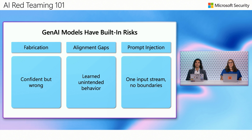Generative AI models have built-in risks. Broadly speaking, we could think of them as risk of fabrications, alignment gaps, and risk of prompt injections. Fabrications happen when the model gives you information that is incorrect but the model is confident about it — for example, citations that generative AI models tend to make up. Alignment gaps stem from models learning behavior that is unintended and not aligned with what we expected. And prompt injection stems from the fact that machine learning models can't really understand the difference between instruction and data, meaning there's one input stream with no boundaries. This is where direct and indirect prompt injection come into play, and our later modules will go into more detail.